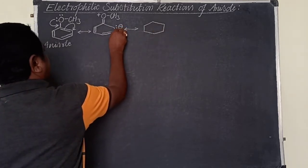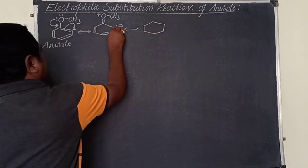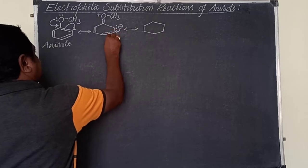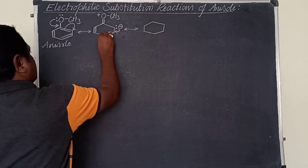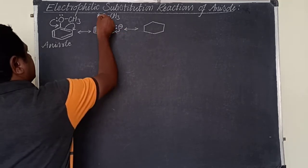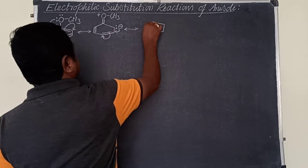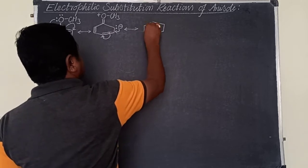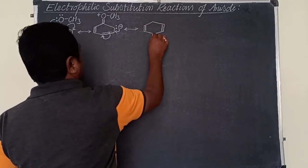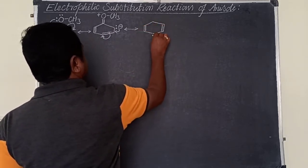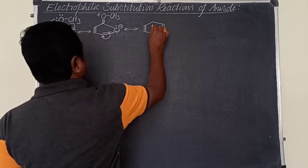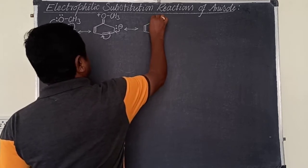These electrons are delocalized towards the adjacent carbon. As a result, the second pi bond of the adjacent carbon atom is delocalized too. This carbon, by gaining the electron, develops a negative charge.